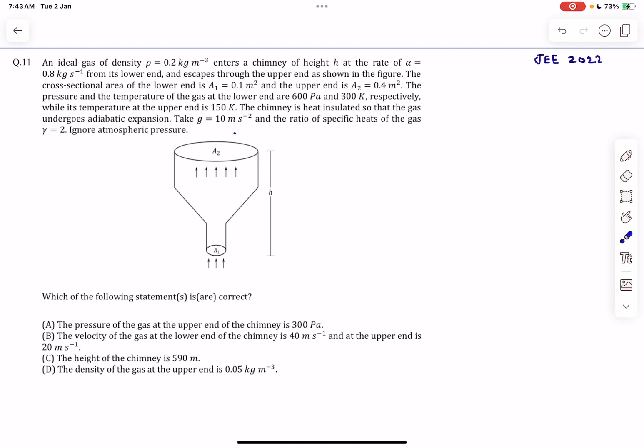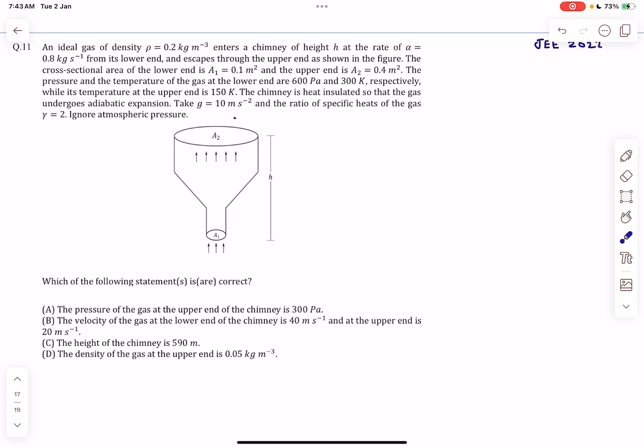This question isn't really challenging, but in order to solve this problem you need to know something that is out of your syllabus. If you want to solve option C, the height of the chimney, you need to know a modified version of Bernoulli's theorem, and we are going to discuss that in this video. Let's begin with the discussion.